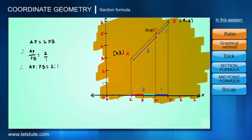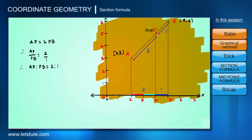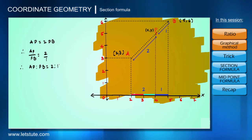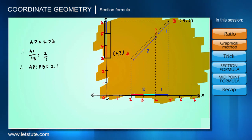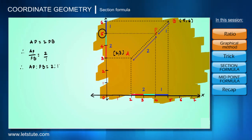Now let's repeat the same process for the Y axis. The Y coordinate of A is 3 and the Y coordinate of B is 6, and we can see that point 5 follows the ratio 2:1. So the Y coordinate of P is 5.